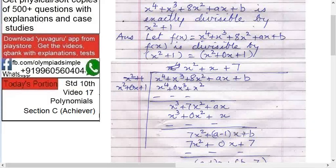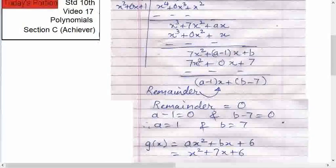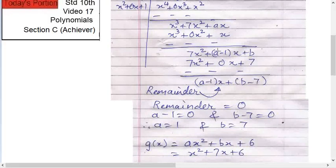Minus 1 into x plus b. This b comes down. Now again first with first, then 7x square, 7x square plus 0x plus 7. So signs change, it becomes a minus 1, say this a minus 1 into x plus b minus 7.